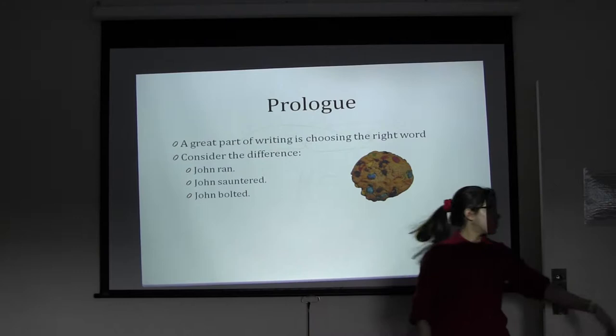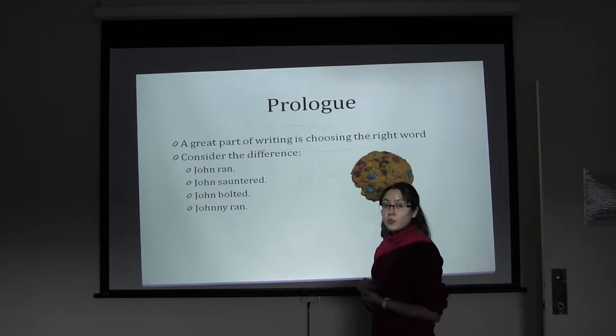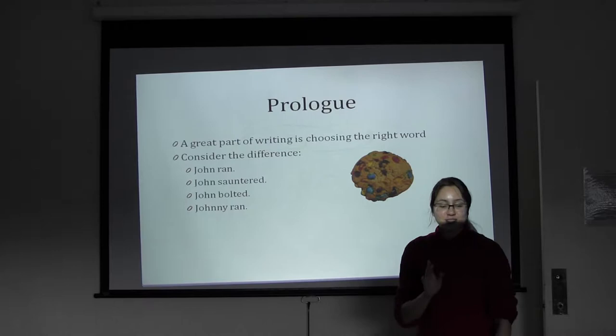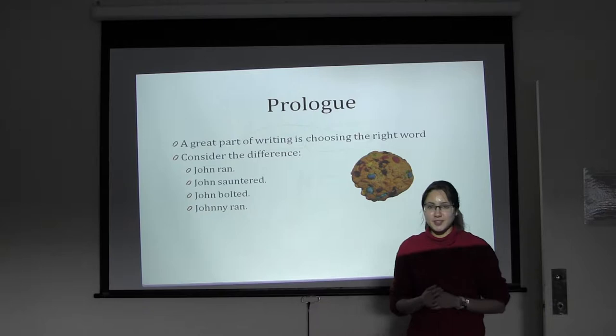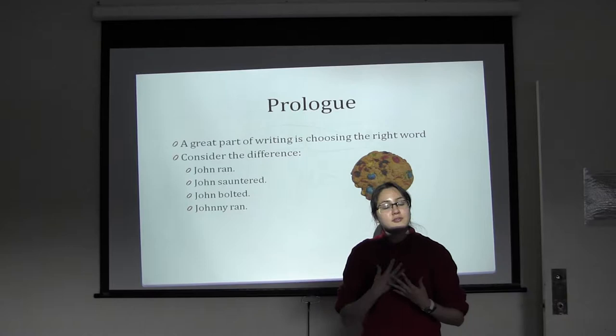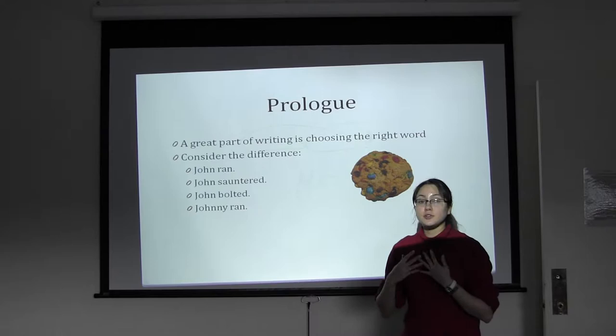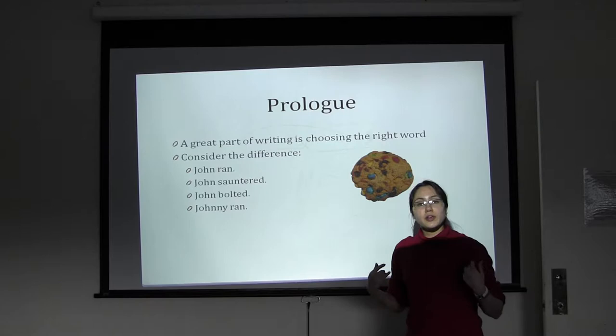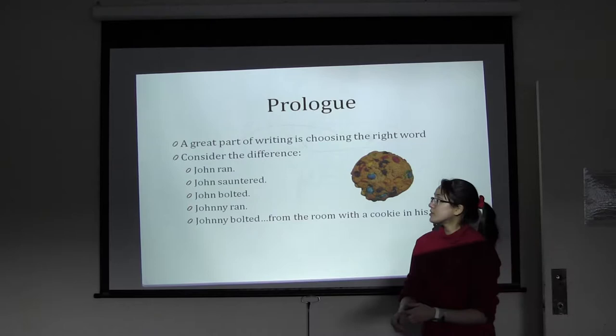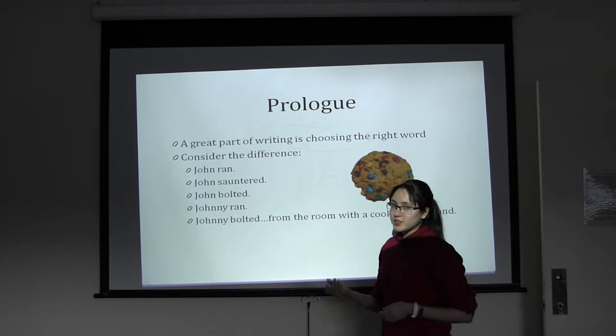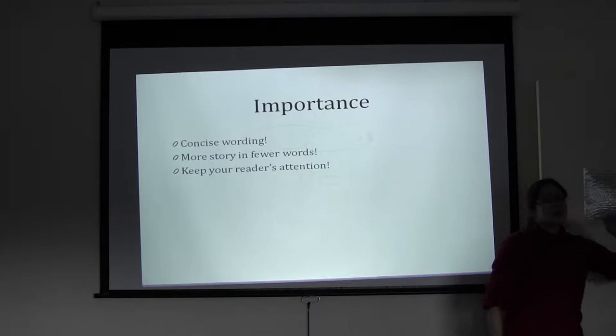Something else we can do is look at changing the name. 'Johnny ran' is one thing we can consider. 'Johnny' tells us the narrator has a very special, endearing relationship with John — endearing enough to call him Johnny. So not only does this tell us something about John, but it tells us something about the narrator as well. Running these two ideas together, we can come up with 'Johnny vaulted,' which gives us the image of maybe a small boy running from a room with a cookie in his hand that he just stole from the cookie jar.